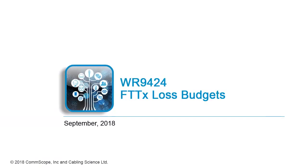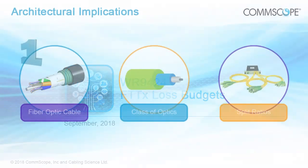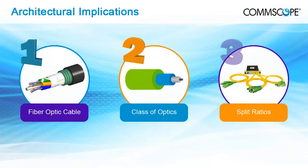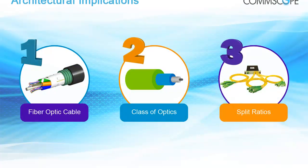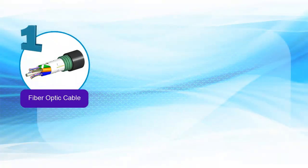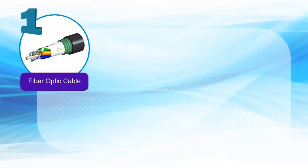Welcome to this webinar where we look at loss budgets in FTTX systems and how they impact configurations and architectural decisions. In FTTX systems there are three key architectural components that decide the allowable length of the optical link, primarily the fiber optic cable.